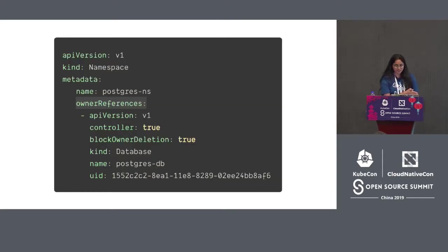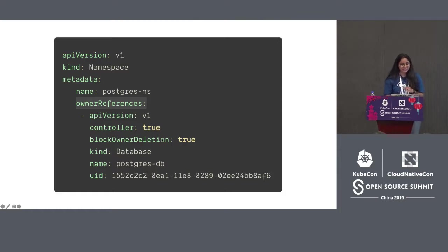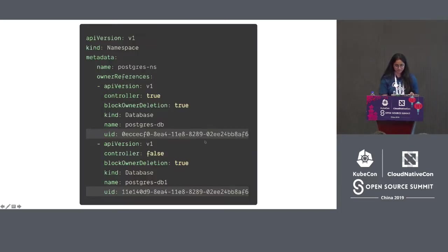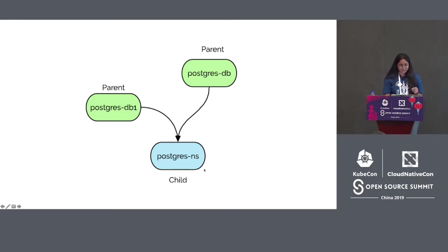Here's an example showing owner references metadata for an object called Postgres-NS. The object Postgres-NS is owned by the object called Postgres-DB. Pay attention to the blockOwnerDeletion field — we will see its significance when we discuss deletion policies. The dependency representation shows Postgres-DB as the owner or parent and Postgres-NS as the dependent or child. In a multiple owner references example, Postgres-NS is owned by both Postgres-DB and Postgres-DB1, which are both parents, while Postgres-NS is the dependent or child.